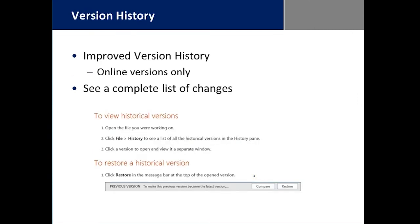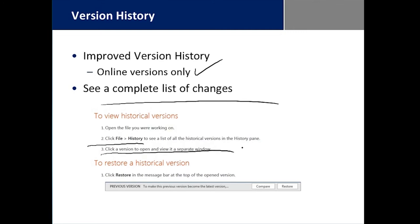We have a great improved version history for the online versions. You always have version history in any installed version of Microsoft Office so you can roll back, but sometimes it wasn't clear what you're rolling back to. In this version history for the online version, you get to see a complete list of changes under File History, and you look at the version you want to open. It'll open in a separate window where you can see a side-by-side comparison of differences or have the ability to restore.